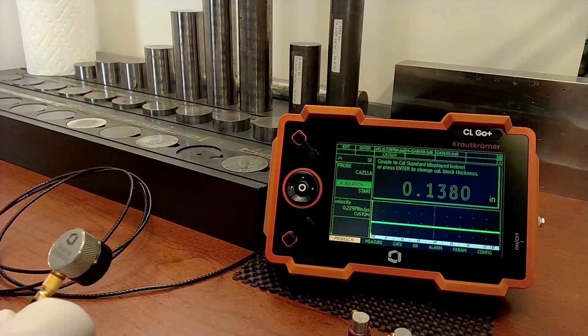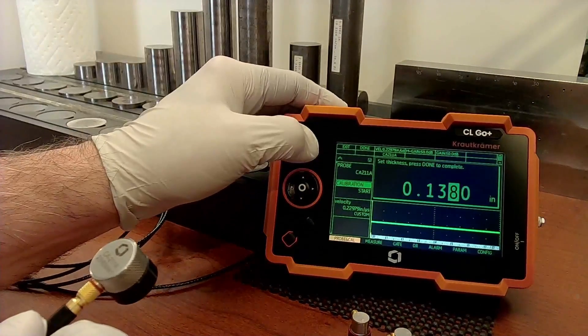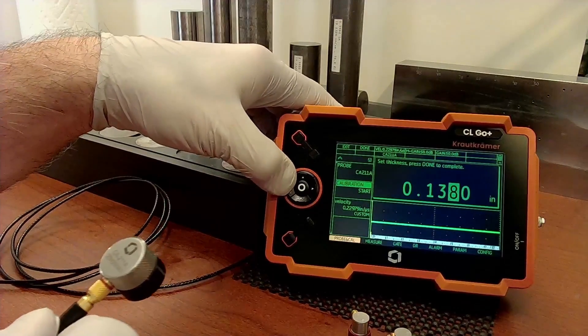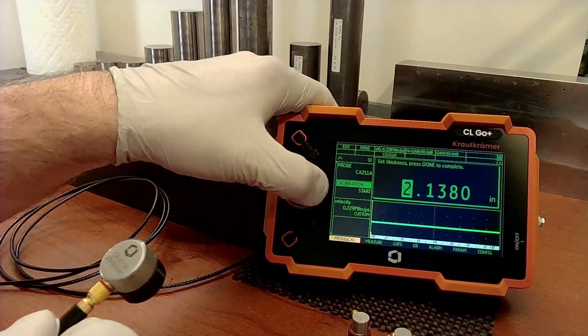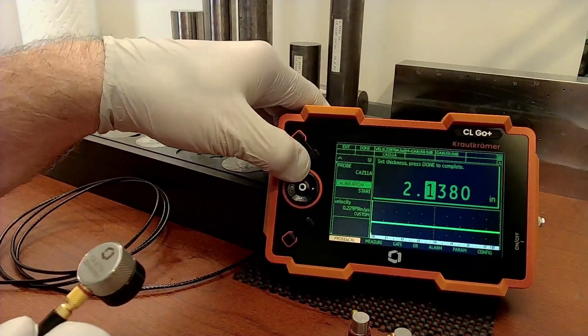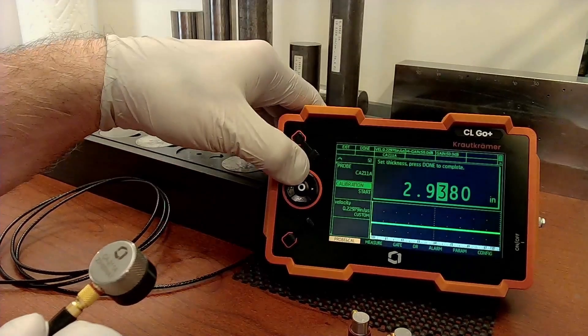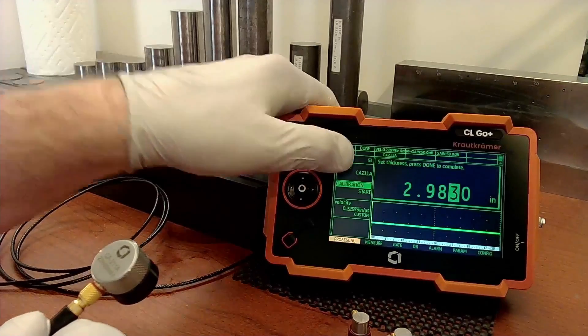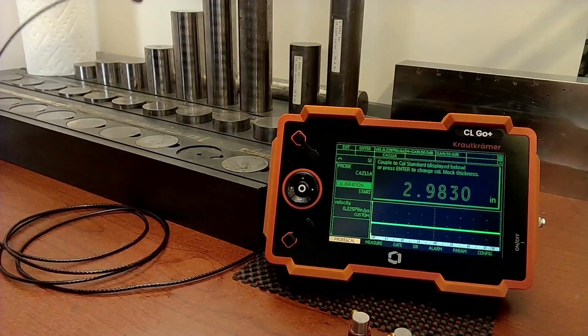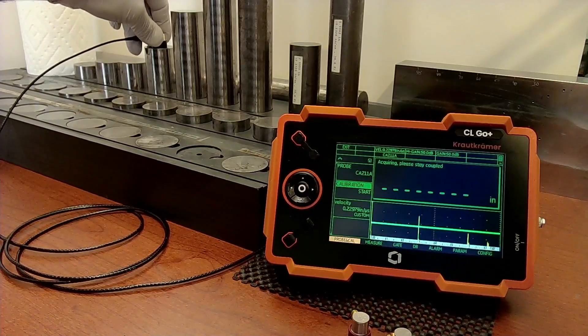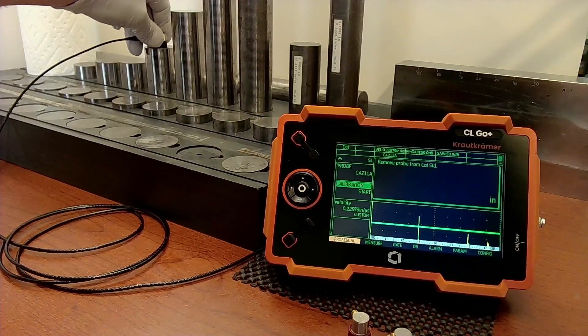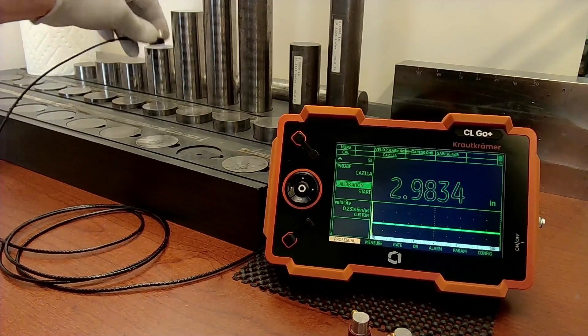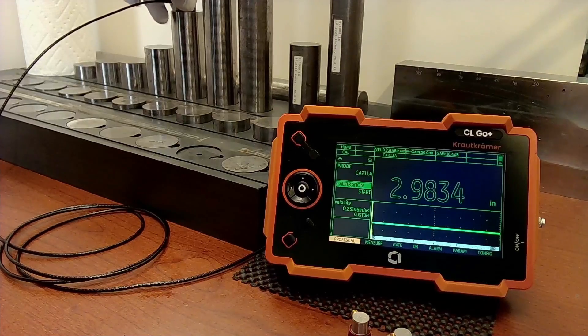And now it's time to go to our calibration block. I'm going to change to a block that's just about three inches. So we're going to say two inches point nine eight three. Okay, we're done. And we'll go to our taller block at two point nine eight three. Instrument locks in. Take it off. Two point nine eight three. And now we can measure our longer blocks.